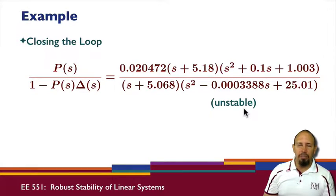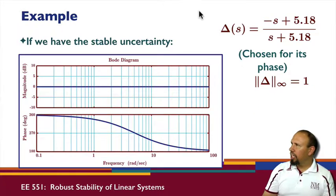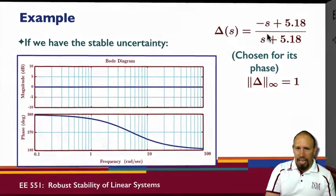We started off with the plant being stable, and we found an uncertainty to make the closed-loop system unstable. This is what's happening. The question is, we have this function here: how do we get this? How do you find that function? Well, one way is using the Nyquist criteria.